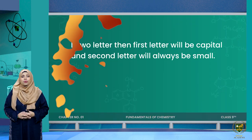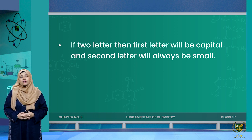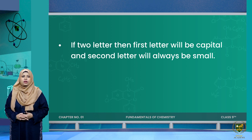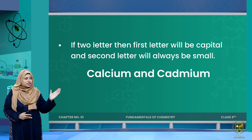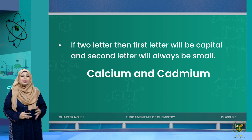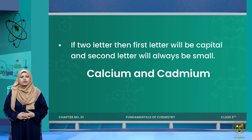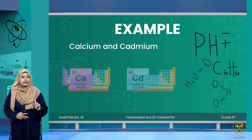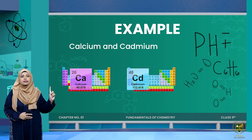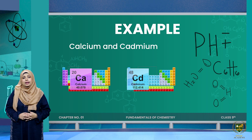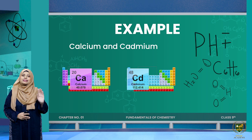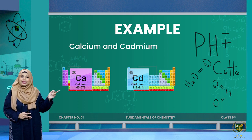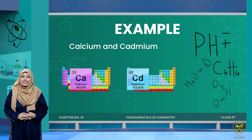If a symbol consists of one letter, it would always be capital. If a symbol consists of two letters, the first letter would be capital and the second letter would always be written in small. Now, will the first one or two letters of the name always work? Consider calcium and cadmium — both start with 'C' and both start with 'Ca', so you would get confused. The next rule clarifies this: if the symbol is one letter, it is the first letter of the name. If it is two letters, the first letter is capital but the second letter can be any letter from the full name.